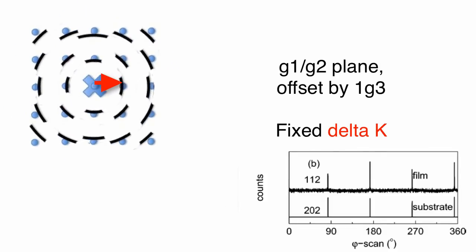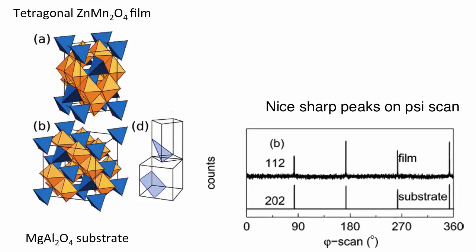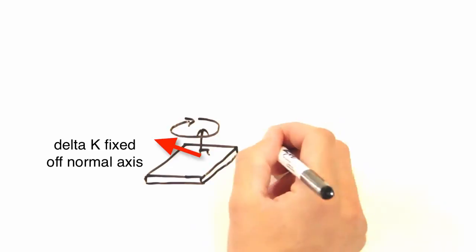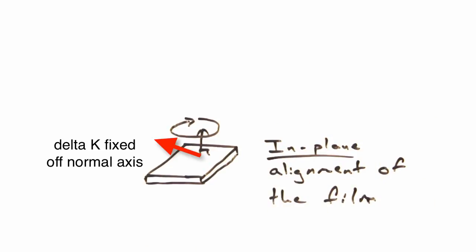So when we see this peak smearing in a phi scan, this gives us a quantitative measure of the in-plane alignment of our film, much like the omega rocking curve for out-of-plane alignment. And that's all we really wanted to say about phi scans. In short, they're a great way to look at in-plane alignment of a film on a substrate.